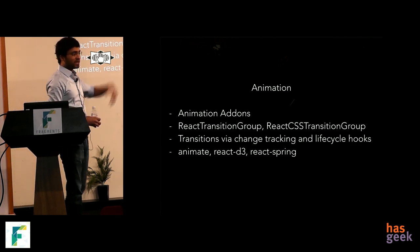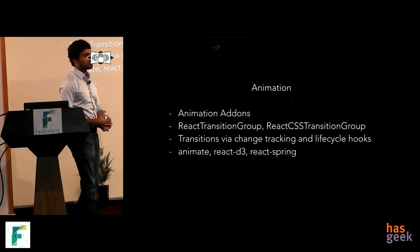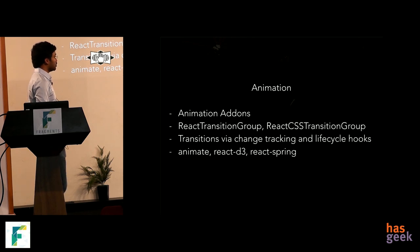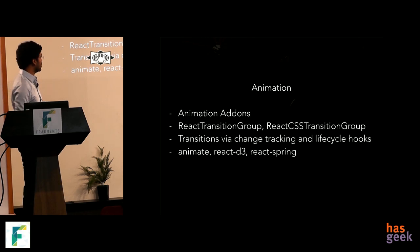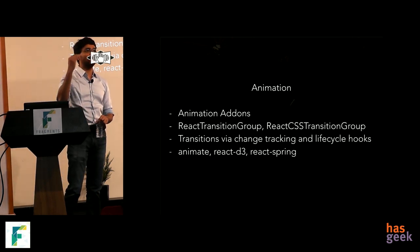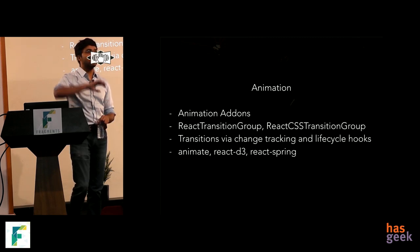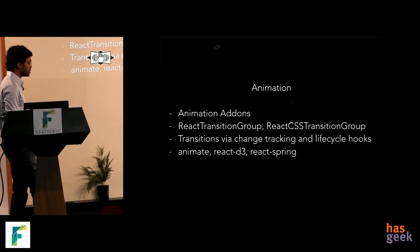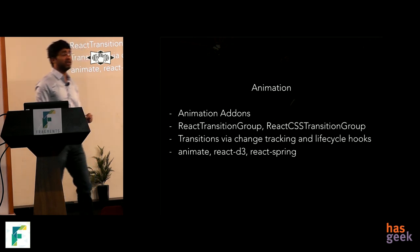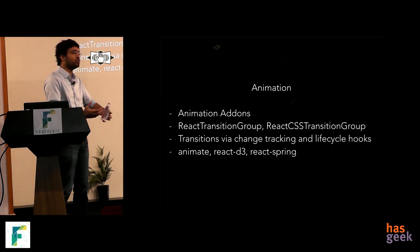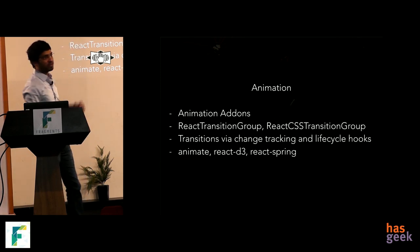When React was introduced it also allowed animation via the addons package — testUtils were part of that too. You would use transition groups, CSS transition groups, and React transition groups, which tracked animations via lifecycle hooks. They would track what was changing on the page and introduce animation when elements were added or removed from the tree. Now animation has evolved significantly, with libraries like Animate, React Spring, and React D3 available to use instead of those older approaches.